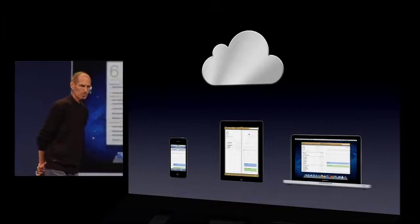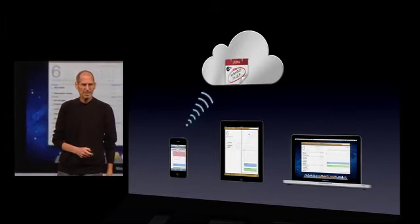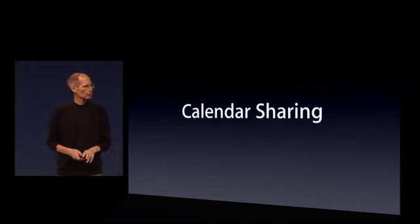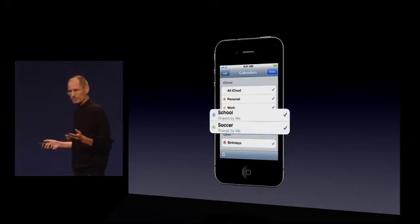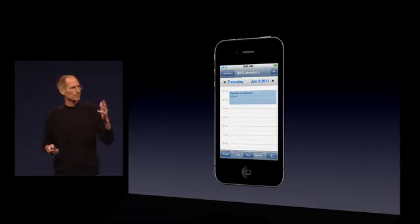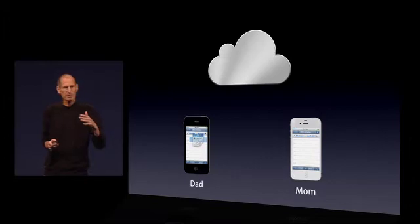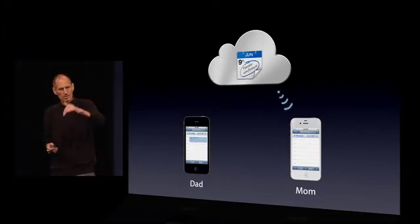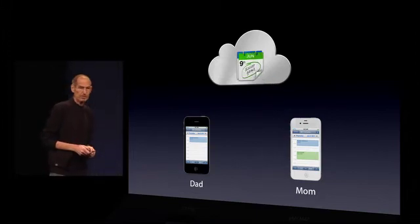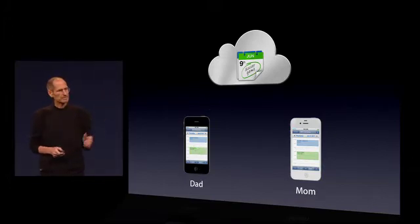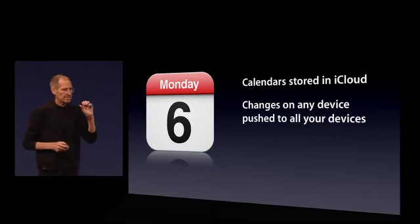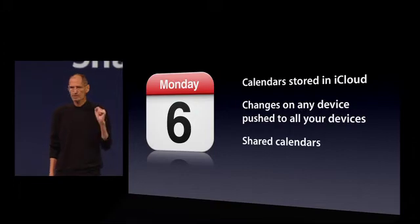So that's contacts. Here's calendars — works much the same way. I make a new calendar event on my iPhone, it's stored in the cloud, and it's pushed to my other devices. We've also added calendar sharing. So as an example, if I'm sharing a few calendars with my wife — school and soccer calendars, let's say — and I add a new calendar for a teacher-parent conference on my phone, it's automatically pushed up to the cloud and automatically pushed to my wife's iPhone. If she adds an appointment for a soccer game, it goes up to the cloud and back to my iPhone. Changes on any device are pushed to all your devices, and we have shared calendars.